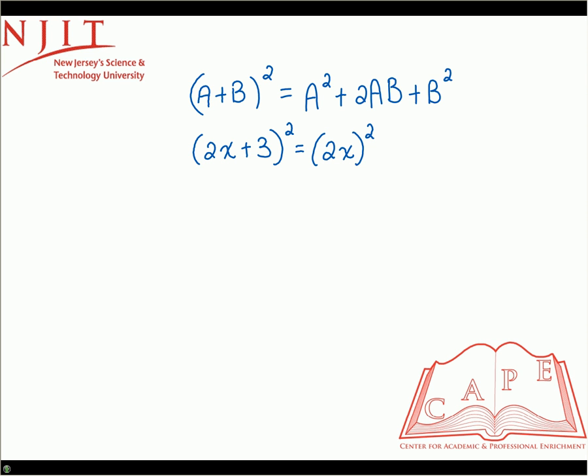Because that way you'll remember that you have to square each piece as opposed to just squaring the x or just squaring the 2. So then the next part is plus 2 times each term, so it's 2 times 2x times 3. And then finally, it's the second term squared, so it's just simply 3 squared.